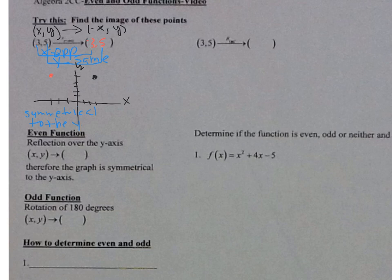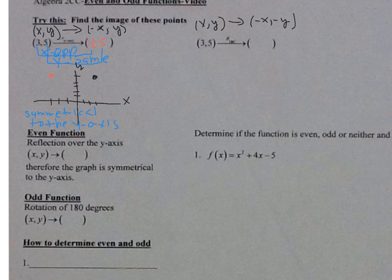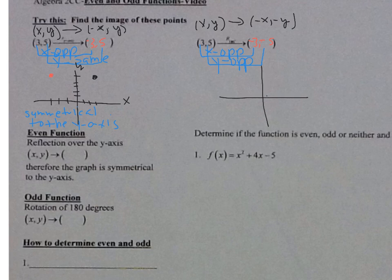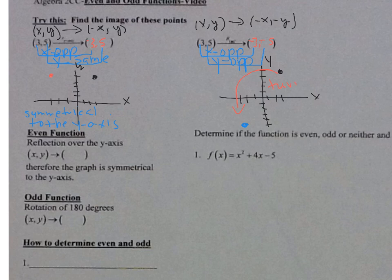Now let's look at the rotation of 180 degrees. Remember, that's like taking your paper and turning it upside down. The rule is: xy becomes negative x, negative y. So (3, 5) becomes (negative 3, negative 5). The x-values are opposite and so are the y-values. On the graph, 3,5 and negative 3, negative 5 are shown — that's a rotation, a turn of 180 degrees.